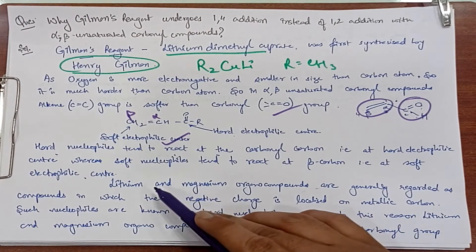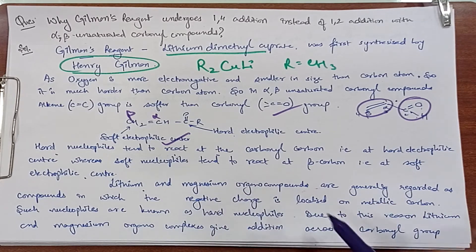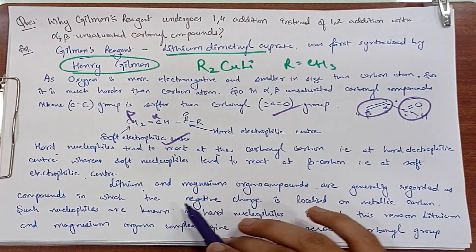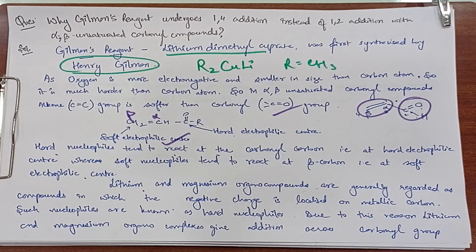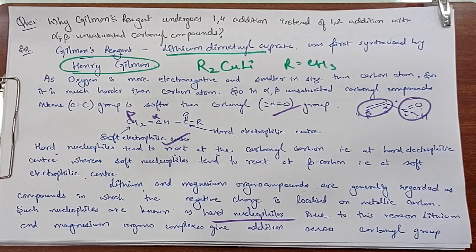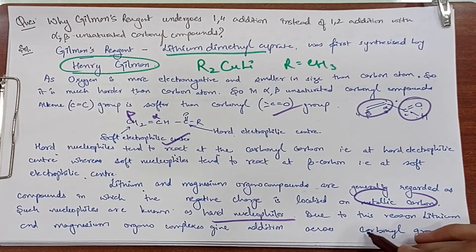Now the first thing is that we have lithium and magnesium organometallic compounds, generally regarded as compounds in which the negative charge is localized on the metal-carbon bond. The carbon atom on the metal atom is localized. That is why lithium and magnesium compounds, we call them hard nucleophiles, because the negative charge is all on the metallic carbon.